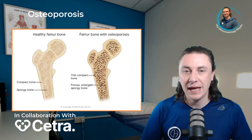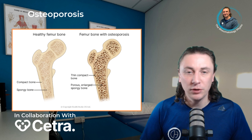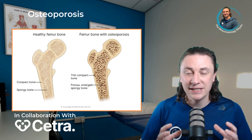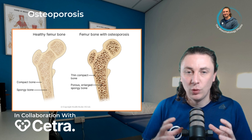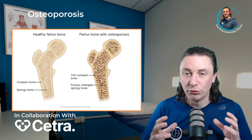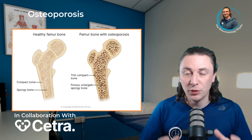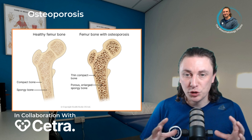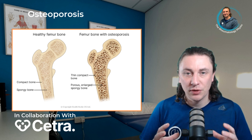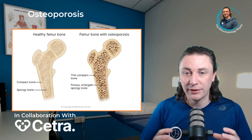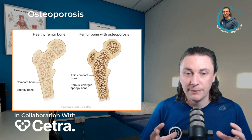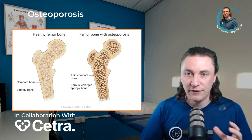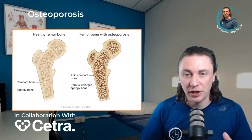On the left you can see a healthy femur bone — that's the bone of the hip and thigh — and you can see how compact the bone is. On the right you can see a femur bone with osteoporosis and how the bone is more spread out with lots more gaps. This is the loss of strength and structural integrity, so if those were scaffolding within the bone, it's easier for that bone to break or fracture.